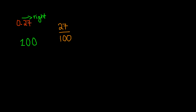Because our smallest place value is the 7, and 7 is in the hundredths place. So therefore it will be over 100. So 0.27 is 27 over 100.